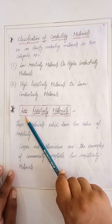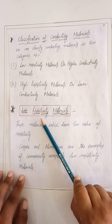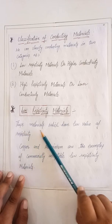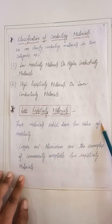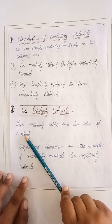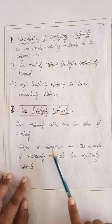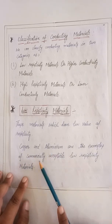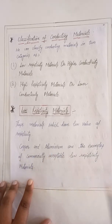First, we will discuss low resistivity materials. Those materials which have a low value of resistivity — for example, copper and aluminium — which are commercially accepted low resistivity materials.